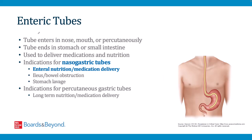Enteric tubes enter through the nose, mouth, or skin and end in the stomach or small intestine. These tubes can deliver things to the gut — like medications or nutrition — and can also suction out gastric contents or air. Nasogastric tubes are placed in the hospital for shorter-term needs, while percutaneous gastric tubes are used for long-term needs. Indications for nasogastric tube placement include medication or nutritional delivery in patients who are unable to swallow, gastric clearance in ileus or bowel obstruction, and stomach lavage in toxic ingestion.